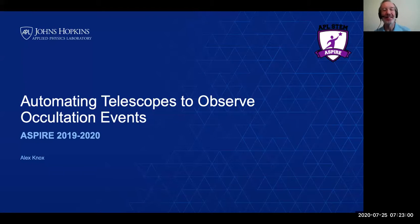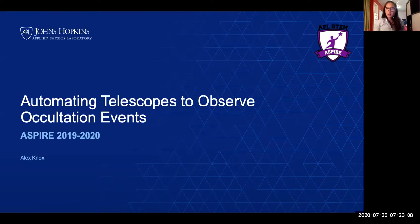All right, so my name is Alex Knox, and this year I was an intern at the Johns Hopkins University Applied Physics Laboratory. I worked with Mr. Stephen Conard to develop a system which would automate the process of observing an occultation. And so here I'd like to describe why I decided this year to focus on that project, and then how I developed that automated system and how I automated it.